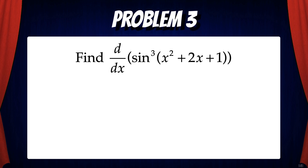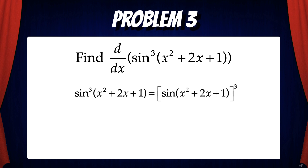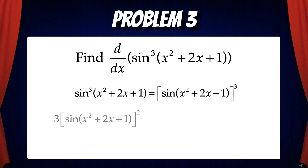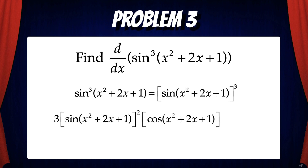Let's try another problem. Find the derivative of sin cubed of (x²+2x+1). Here it's important to note that sin cubed(x²+2x+1) is really the quantity of sin(x²+2x+1) raised to the third power. It's important to remember this notational quirk of trig functions. So we have an inner function and an outer function, meaning we're going to apply the chain rule. First we'll apply the power rule to the outside, giving us 3 times the quantity of sin(x²+2x+1) raised to the second power. Now we're going to take the derivative of the inside, but the inside is also a composition of functions, so we have to use the chain rule again. The derivative of the outside part is cosine of (x²+2x+1), and we multiply by the derivative of the inside, which is 2x+2.